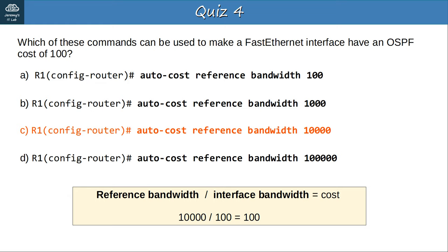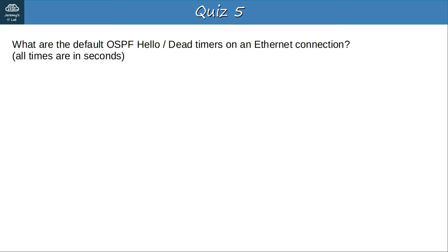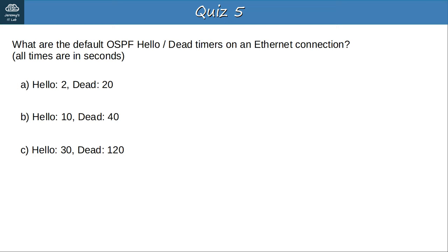Question 5: What are the default OSPF hello and dead timers on an Ethernet connection? The answer is B — hello 10 seconds, dead 40 seconds. For some other kinds of connections, the default OSPF timers are 30 and 120 seconds, but for Ethernet connections the defaults are 10 and 40.